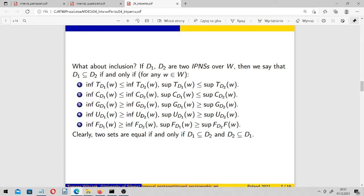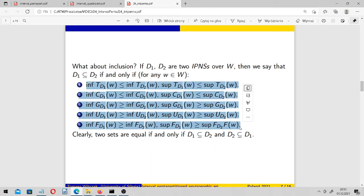So what about the notion of inclusion? If we have two intuitionistic pentapartitioned neutrosophic sets over the same universe W, then we can say that D1 is contained in D2 if and only if the following conditions are satisfied.